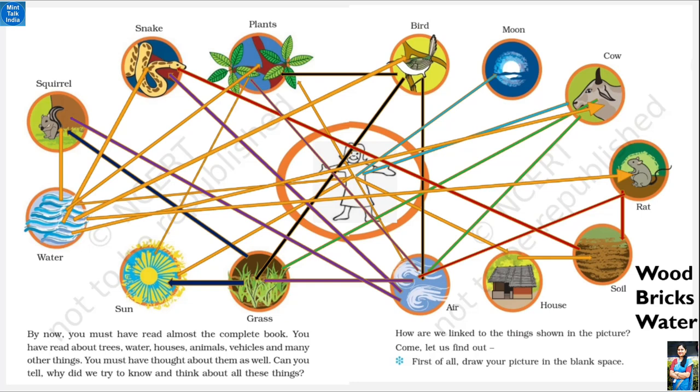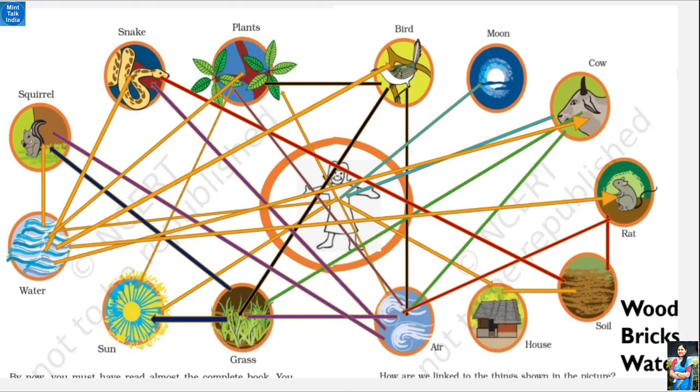From this activity, what do we know? That our life is not just dependent on one or two things. It is dependent on many things. This photograph shows a very big network, just like a big web. That is why it is called the web of life.